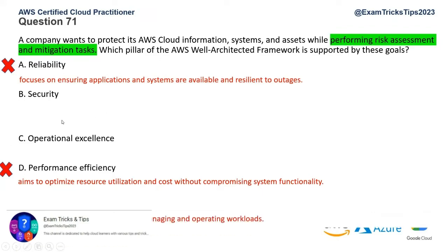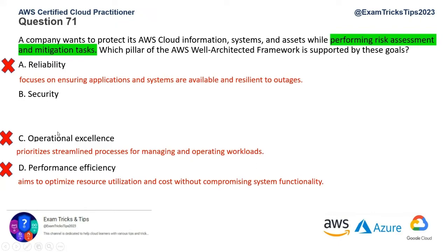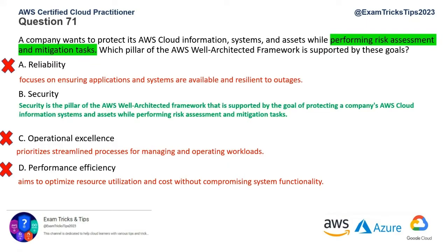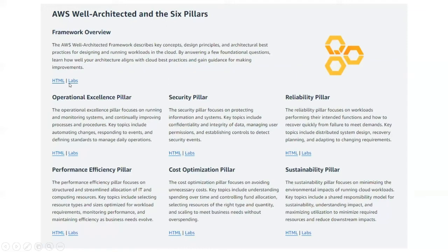We are left with option B, security. Security is the pillar of the AWS Well-Architected Framework supported by the goal of protecting a company's AWS cloud information systems and assets while performing risk assessment and mitigation tasks. The answer for this question is option B, security. Looking at the reference documentation, the security pillar focuses on protecting information and systems, and this is where risk mitigation and risk assessment comes into picture.